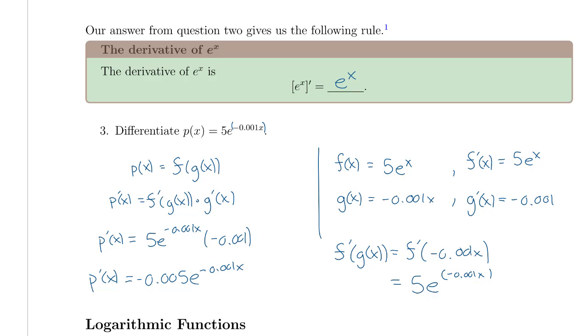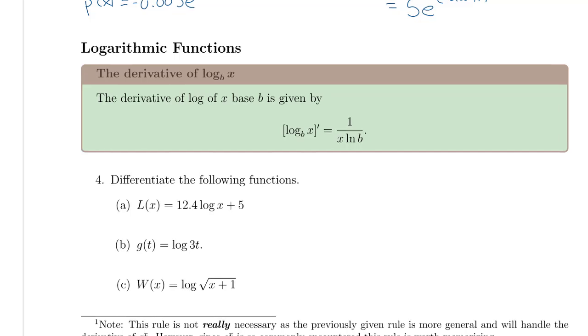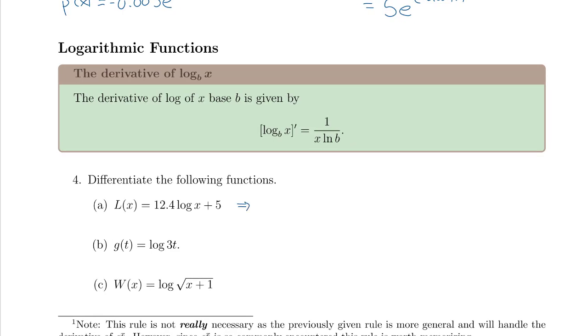So this is an example of a function where we have to use both chain rule, power rule, and our exponential rule. So we're going to start having to use all these rules in combination. The other rule that we'll cover in this section are derivatives of logarithmic functions. So the derivative rule is given here for any base b. The log base b of x derivative is 1 over x times the natural log of the base b. So looking at these functions you can go ahead and try this on your own. Otherwise just follow along. So l prime in this case is given by 12.4. That's a scalar constant that doesn't change the derivative. Times x over the natural log of 10. Remember that when you see just log of x that's log base 10. The second term 5 is a constant so its derivative is 0.